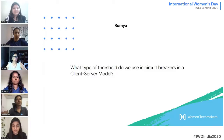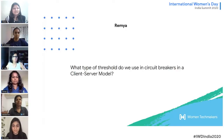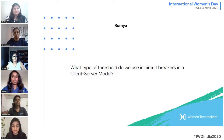The next question is for Ramia: what type of threshold do we use in circuit breakers in a client-server module? The circuit breaker pattern works this way — a service client should invoke a remote service via a proxy that functions similarly to an electrical circuit breaker.